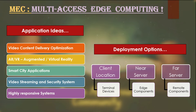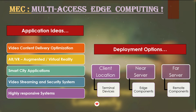Based on the needs, the resources of MEC can be deployed at the client location like in their factory or workplaces — these are called terminal devices. Another option is they can deploy devices to the nearest server from the client location. And in the third option, they can be kept at far servers like in data centers or regional centers.